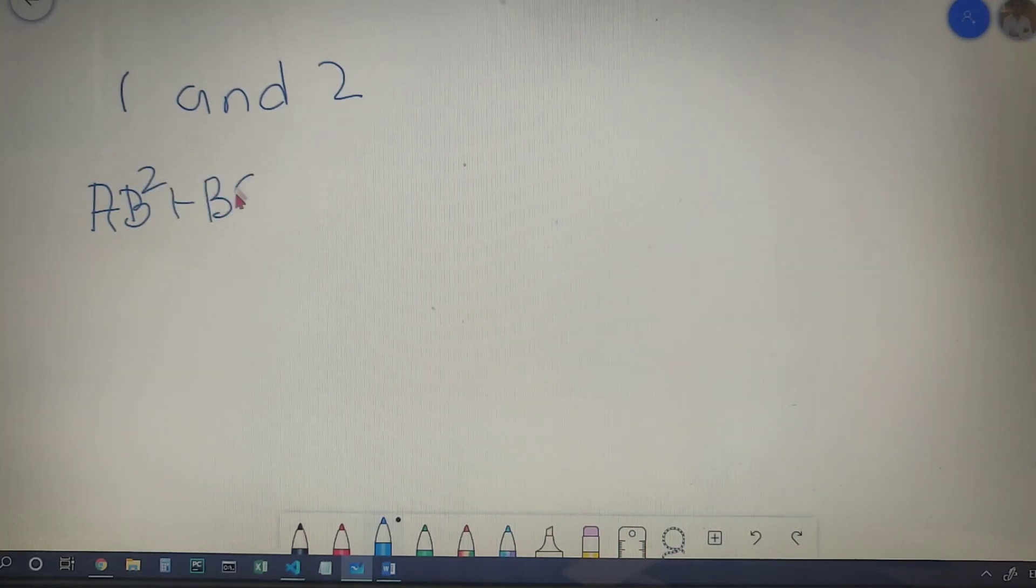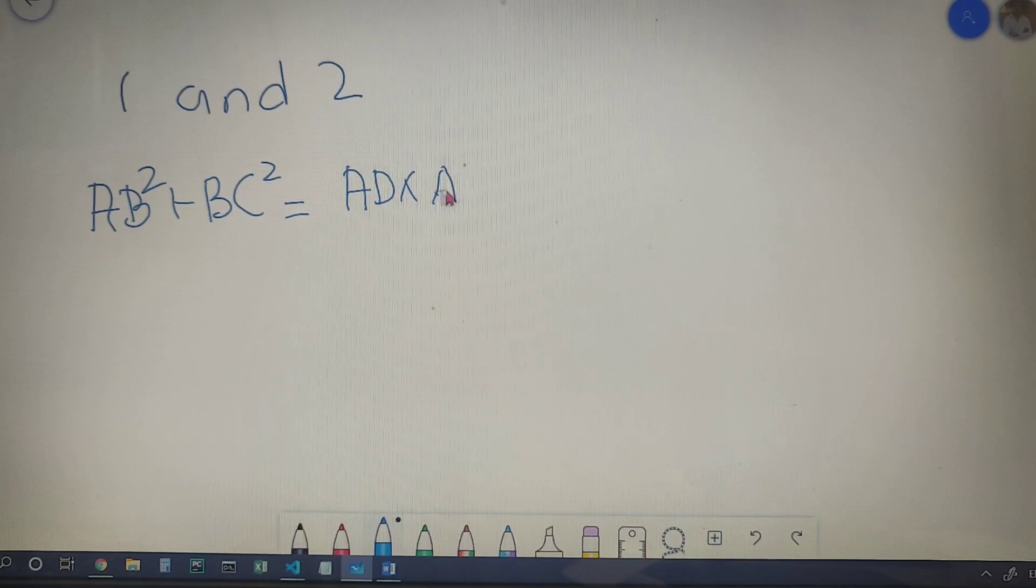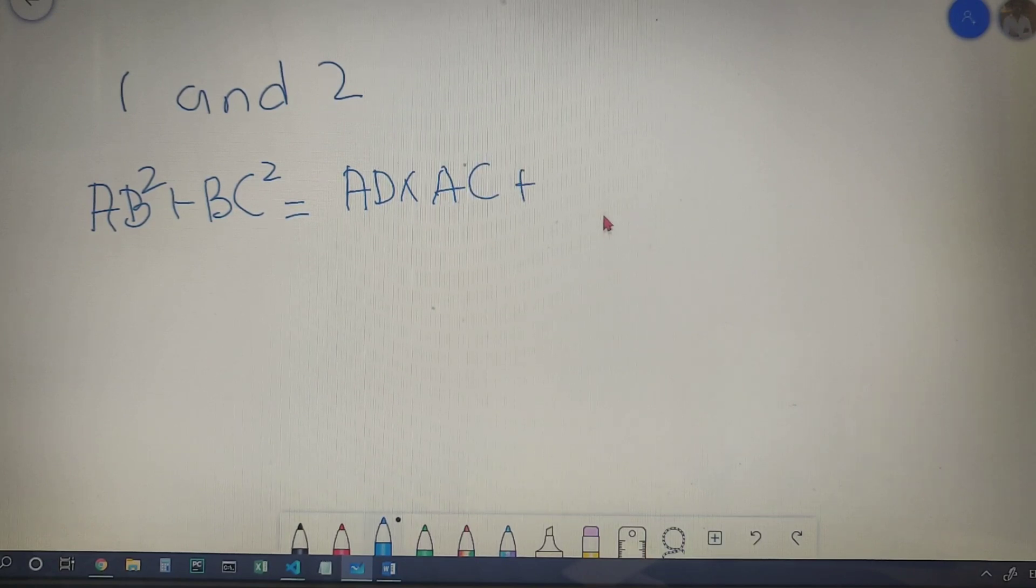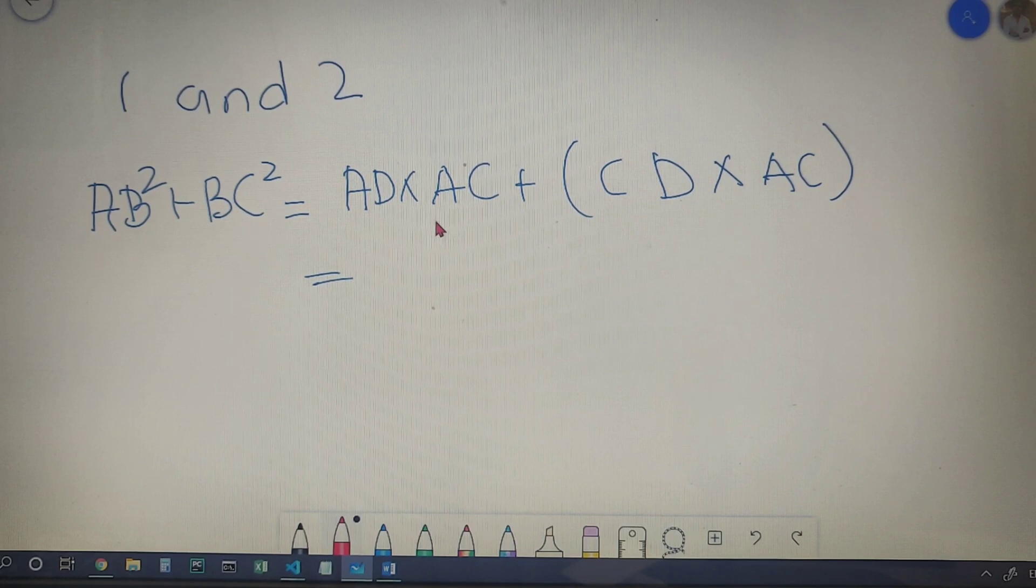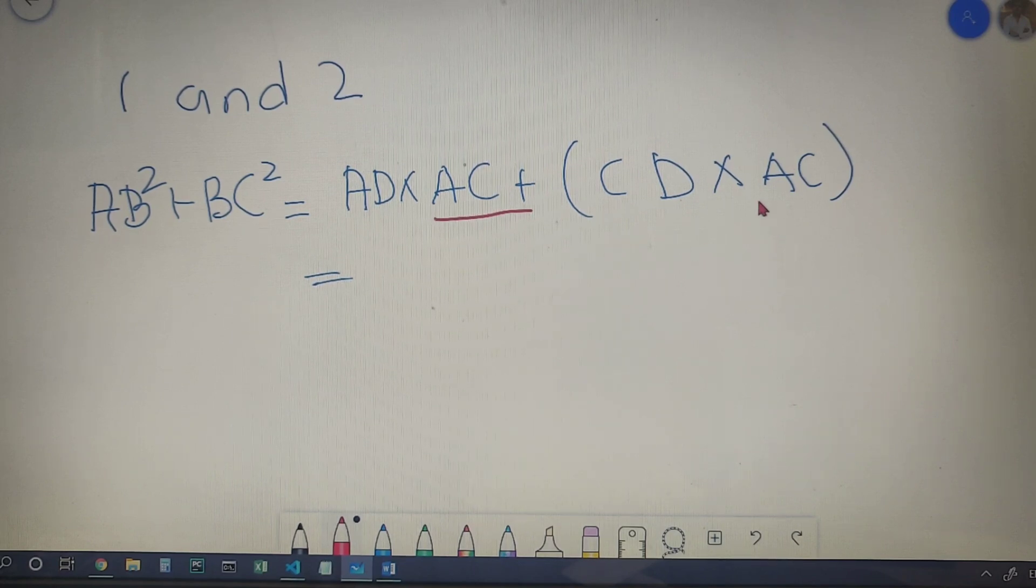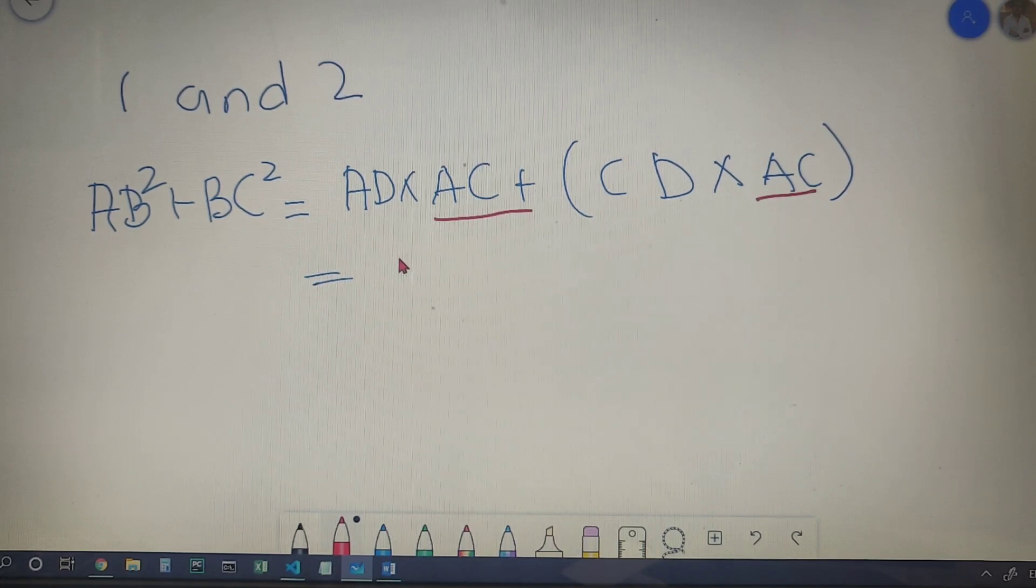Upon adding we will get that AB square plus BC square is equal to AD into AC plus CD into AC. You can see that we have AC common in these two parts.